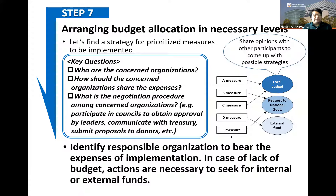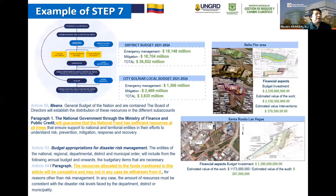Step seven: you need to arrange budget allocation at necessary levels. Identify the responsible organization to bear the expenses of implementation. In case of lack of budget, actions are necessary to seek internal or external funds. This is a good example of step seven from Colombia, where they have a specific fund for DRR measures and utilize that mechanism.